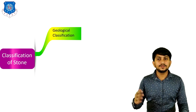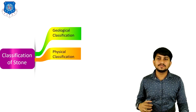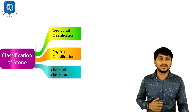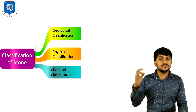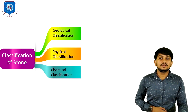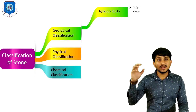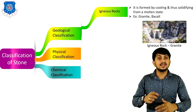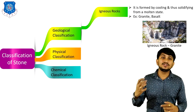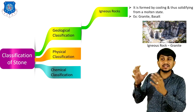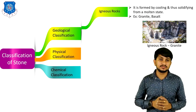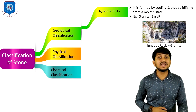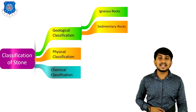Stone is generally classified into three types: geological classification, physical classification, and chemical classification. In geological classification, the first type is igneous rocks, which are formed by cooling and solidifying from a molten state. Examples of igneous rocks are granite and basalt. This figure shows granite, one type of igneous rock.